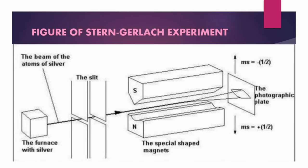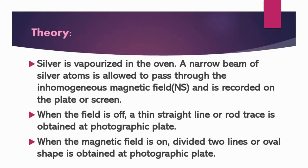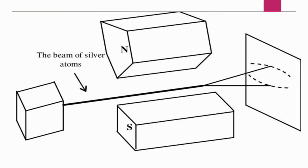The silver metal comes into atomic state and the silver atom is passed through the inhomogeneous magnetic field. When the magnetic field is on, two lines or an oval shape is obtained at the photographic plate.